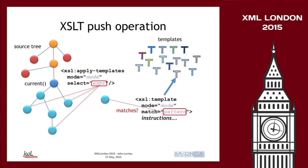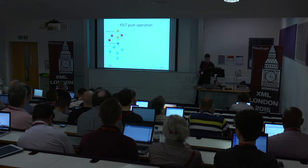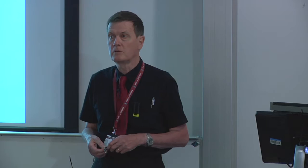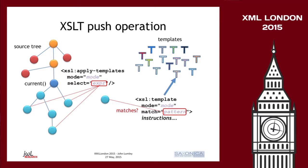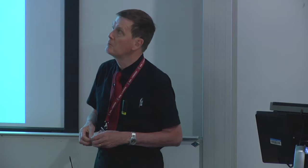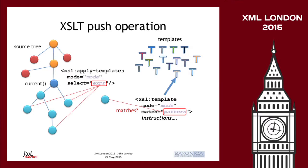We're somewhere in the source tree at a current node, and an instruction says apply your templates against some set of nodes derived from that node using an XPath expression — in this case, all the leaf nodes underneath that node. The templates can be registered to respond in particular modes, so there is mode control. There's a big field of templates — in the examples I'm going to choose, there are about 600 — and many of them have match patterns, which are a modified form of XPath expression. If it matches, you execute the instructions that template contains to produce some result.